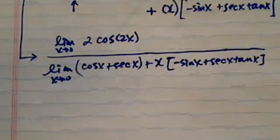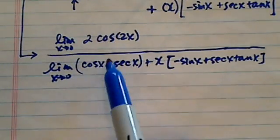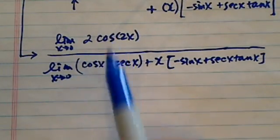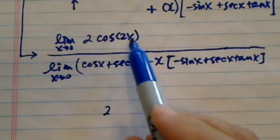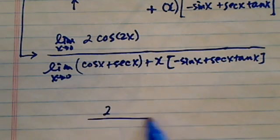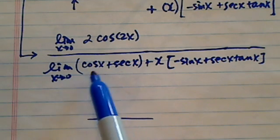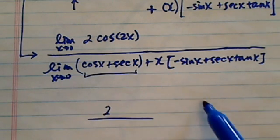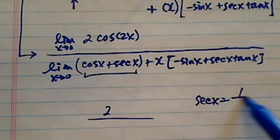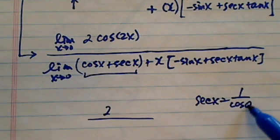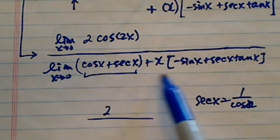We're going to take each term separately. On top, if you plug 0 in there, you'll see it's 2. 2 times cosine of 0 is really 2. On the bottom, you can see this chunk is, since secant x is really 1 over cosine of x over here. So this term is non-zero.